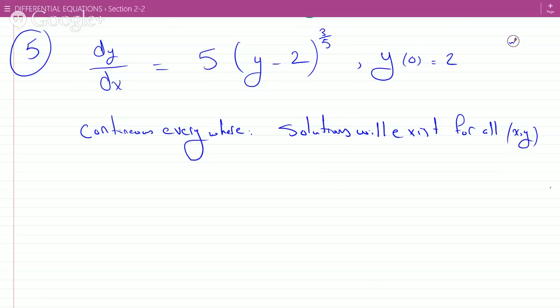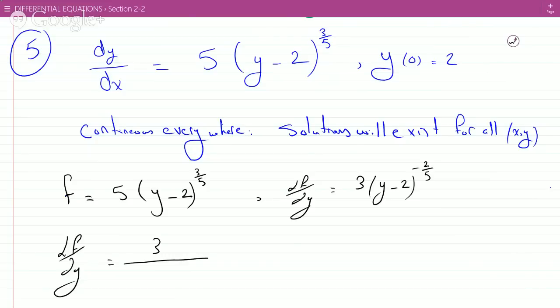Okay, now how about exist and unique? Now we use the existence and uniqueness theorem. We're going to say f equals 5(y-2)^(3/5). So that makes ∂f/∂y = 3(y-2)^(-2/5), which makes ∂f/∂y = 3/(y-2)^(2/5). Now,